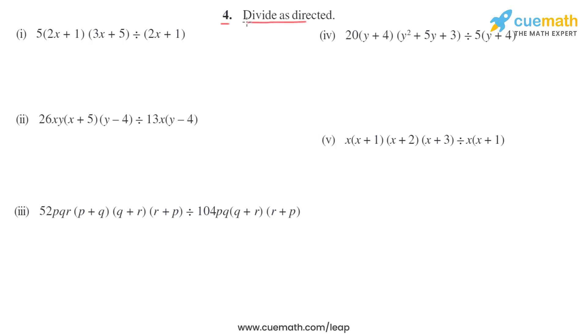Fourth question, divide as directed. We have to divide. So first part: 5(2x+1)(3x+5) divided by (2x+1). We can write it in fractions, so 5(2x+1)(3x+5) divided by (2x+1). So 2x+1 and 2x+1 gets cancelled, so the final answer is 5(3x+5).